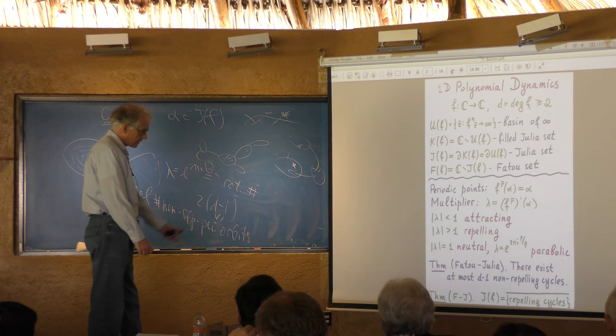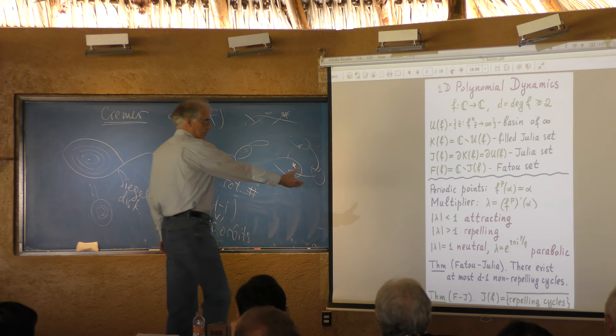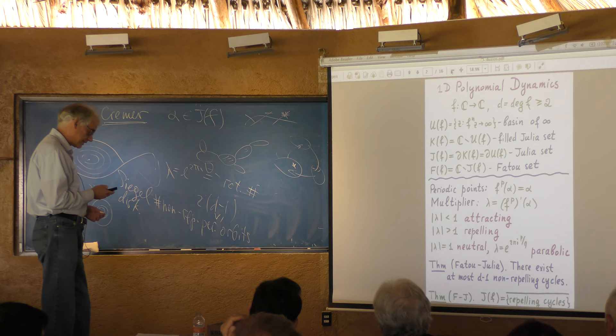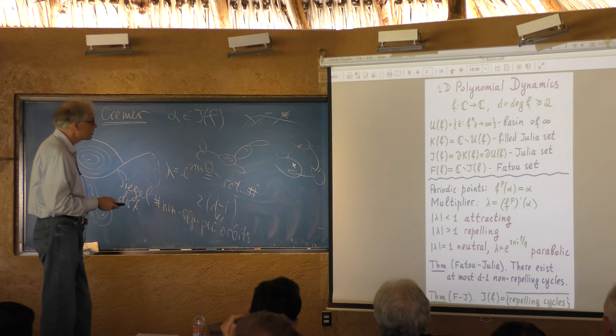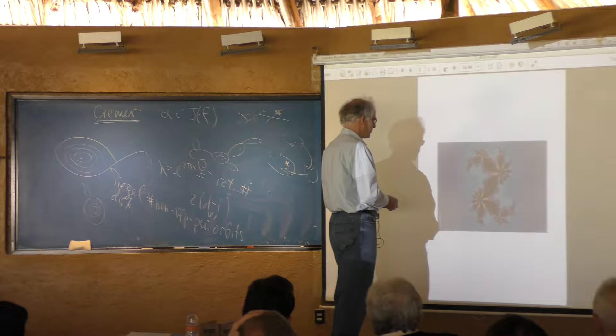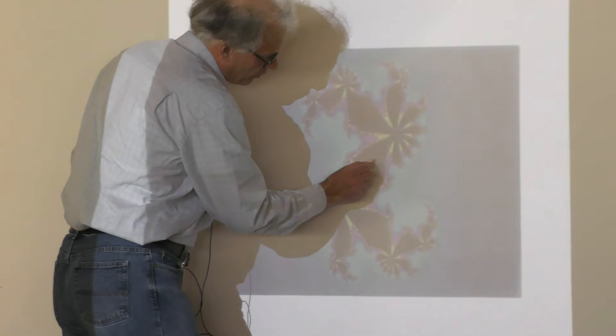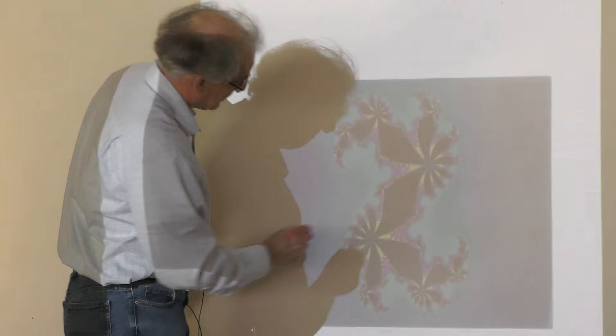Another classical important result is that the Julia set can also be defined as the closure of the set of repelling cycles — the repelling cycles are dense in the Julia set. Here is a typical Julia set picture: the basin of infinity, the filled Julia set, and the Julia set as the skin. In this case there is an attracting cycle of period 8, and there is a critical point right in the basin of this attracting cycle.